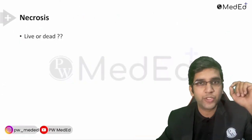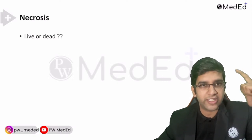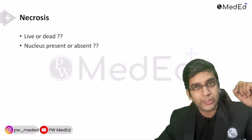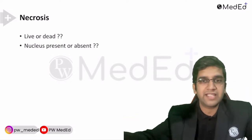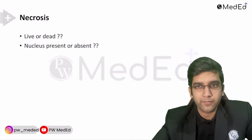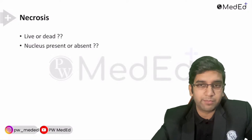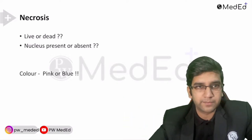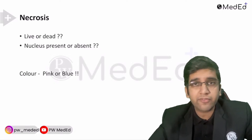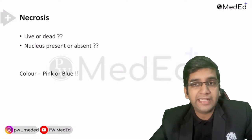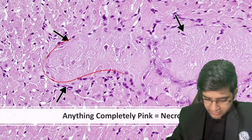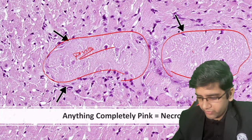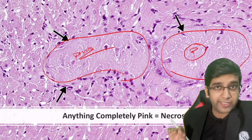So, a necrotic tissue — a dead tissue. I'm going to ask you very simple leading questions. A dead tissue — will the nucleus be present or absent? The nucleus will obviously be absent. If you remember the basic thumb rules of histopathology: what is the color of the nucleus? Pink or blue? The color of the nucleus is blue. So I have a blue nucleus which is not present in necrotic tissue. So necrotic tissue is going to be pink in color. In a microscope, if you find anything completely necrotic, it is going to be completely pink. Anything completely pink — think of necrosis. That is the first thumb rule.